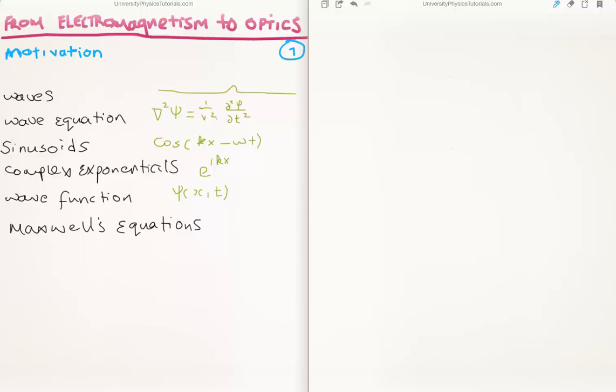Now this should make sense to you because think about your computer. In order to, let's say write a piece of code or write a program on your computer, in theory you could write that piece of code by just looking at the atoms and the molecules in the computer itself.